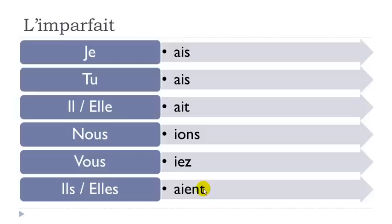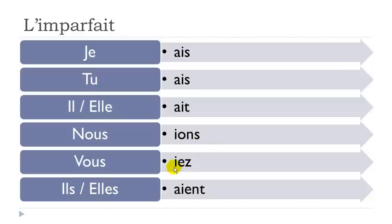For the nous form, the ending '-ions' is pronounced 'yon' — a nasal 'on' sound. Adding the 'i' before gives the 'y' glide: 'yon'. The vous ending '-iez' is pronounced 'yay'. So the full set sounds: a, a, a, a, yon, yay, a, a.